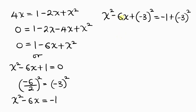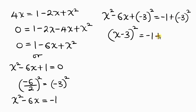The left hand side becomes a perfect square: (x minus 3) squared. This is equal to negative 1 plus negative 3 squared, which is negative 1 plus 9. So (x minus 3) squared equals 8.